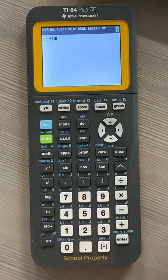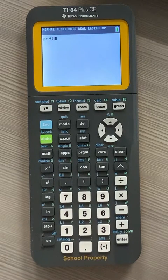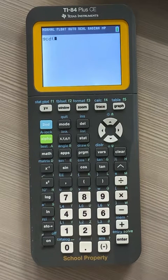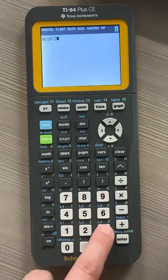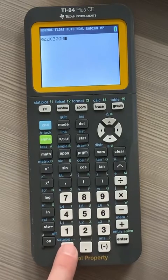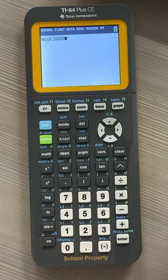If you hit enter, it puts a parenthesis. Now you want to tell it which two numbers you want to find the greatest common factor. For example, if I wanted to find the greatest common factor of 3,000, I type in 3,000.